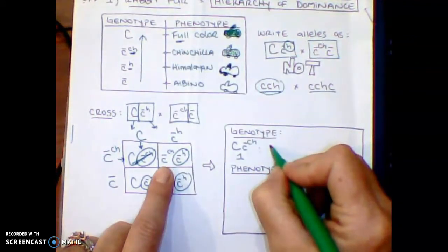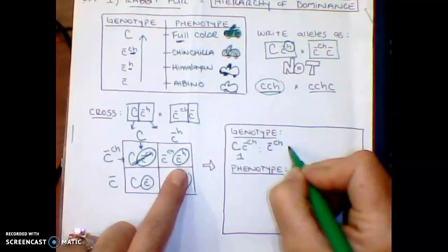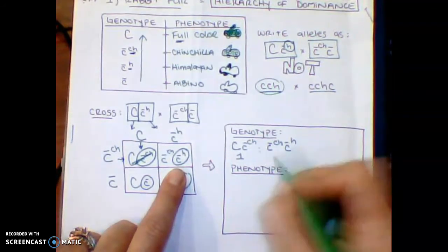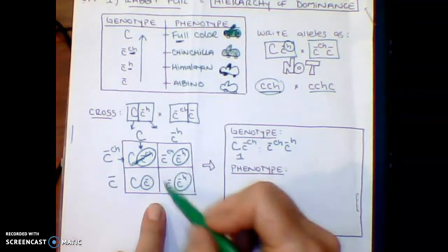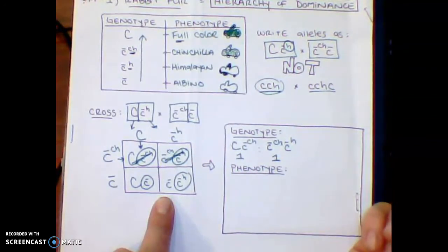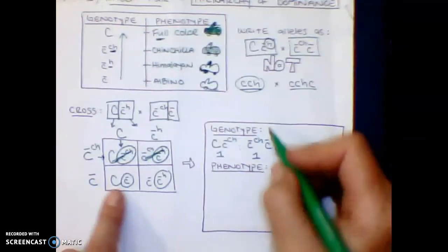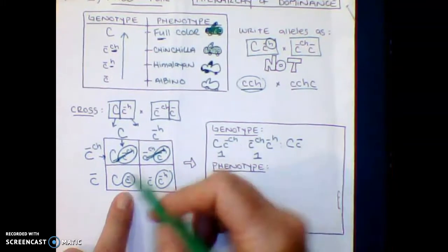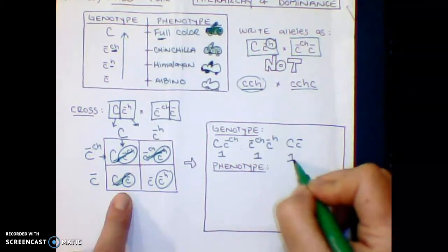So we're going to write over here our genotype, the little c CH and then the c H. And then how many of them do we have in our combination? We only have one, cross them off. The next one we have is big C, little c. We only have one, cross it off.